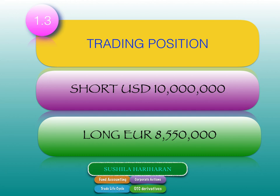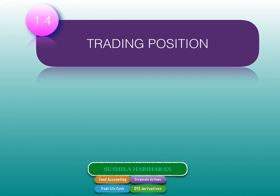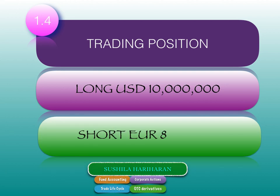You cannot leave it hanging, otherwise you'll have reconciliation problems. To keep a concrete picture of the amounts, we have to mention both trading positions. For KH Bank, the trading position is long USD 10 million and short EUR 8.550 million — the mirror image of Hari Hedge Fund's position. These mirror positions of both counterparties are very evident in this kind of trade.